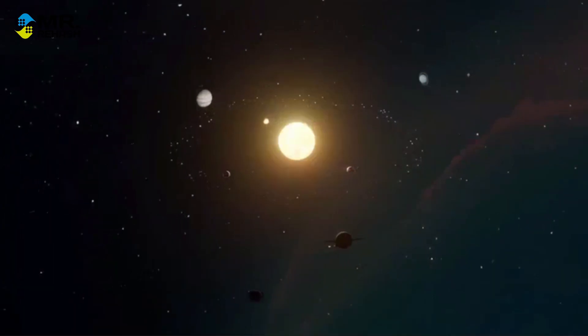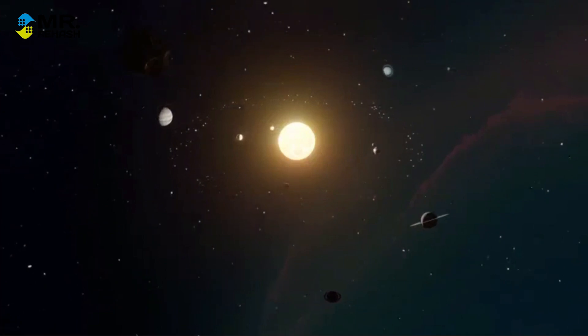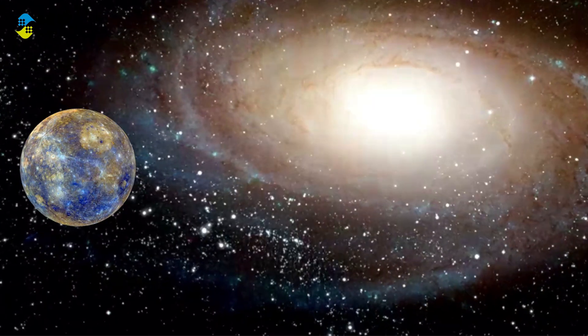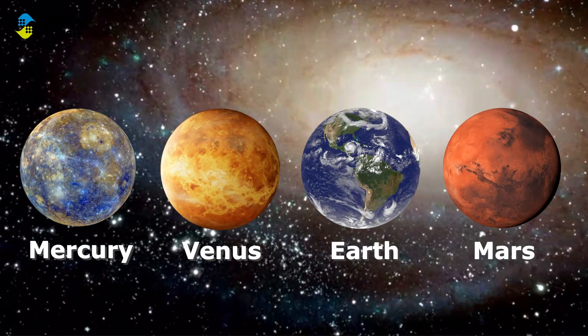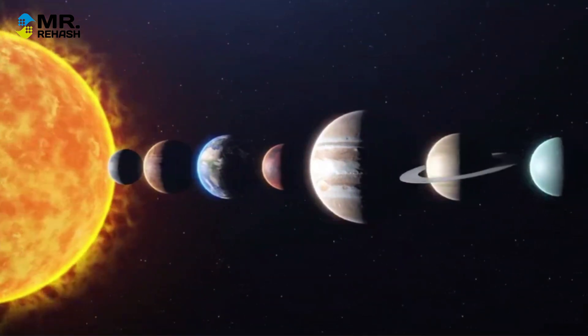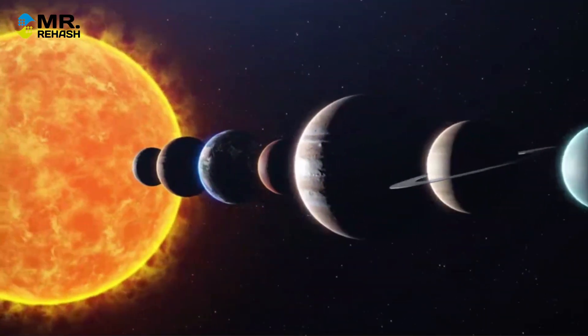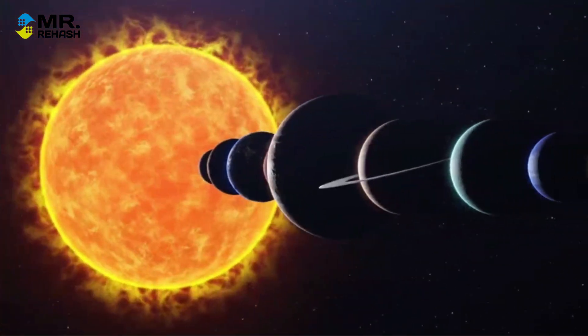Now let's talk about the planets within our solar system, often referred to as the inner planets. These include Mercury, Venus, Earth, and Mars. Unlike stars, planets do not produce their own light. Instead, they reflect sunlight, making them significantly dimmer in comparison.